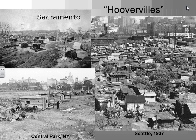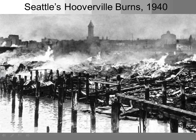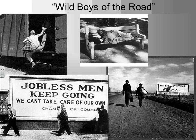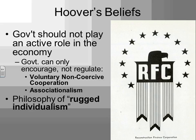One of the largest Hoovervilles in the country was in Seattle — you can see the train yards in the back — and there's even a photo of that same Hooverville burning to the ground in 1940. Hoovervilles were extremely dangerous — real fire traps, disease spread, hotbeds of crime. Another thing that happens is a lot of people just take off and leave, especially young men looking for work. We see a tremendous amount of train hopping and hoboism — riding empty boxcars or on top of cars — just moving around the country looking for some sort of stability.